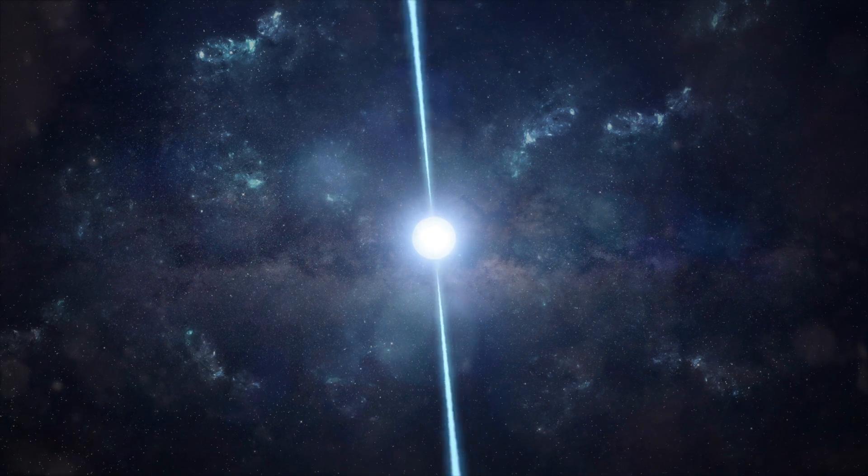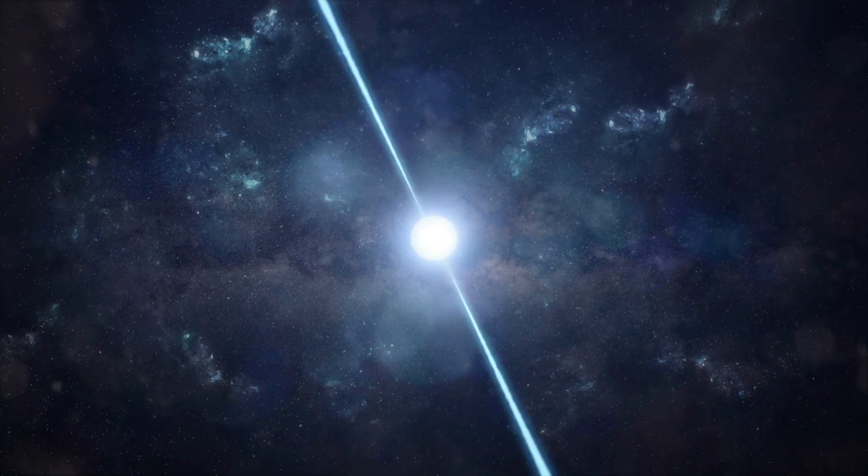Gravity on a neutron star is two billion times stronger than gravity on Earth. In fact, it's strong enough to significantly blend radiation from the star in a process known as gravitational lensing.